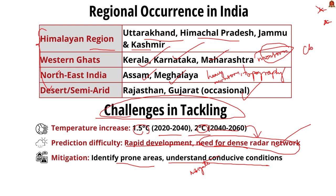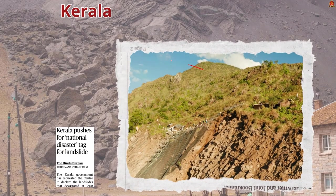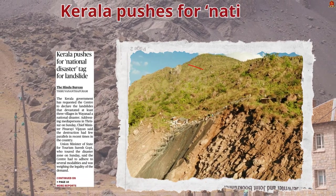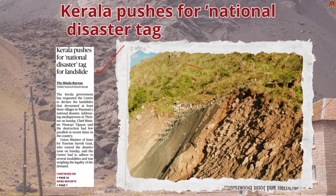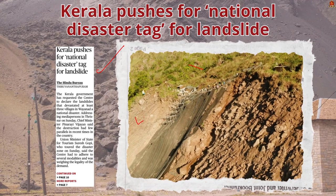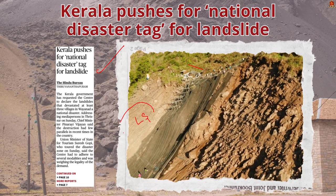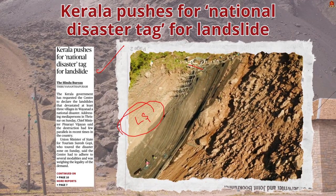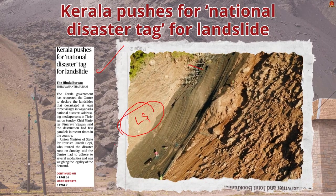To summarize the cloudburst discussion: we covered its characteristics, where it occurs in India, and the challenges in tackling it. Moving to the next article — the Kerala government has urged the central government to declare the recent landslides as a national disaster. In this discussion, let us understand the definition of disaster, its legal backing, and the benefits of declaring a national disaster.